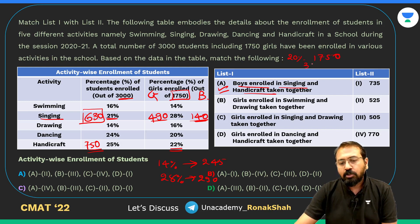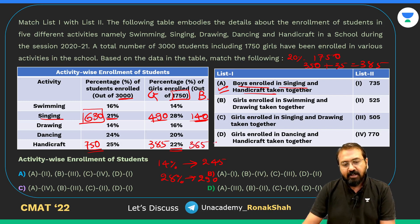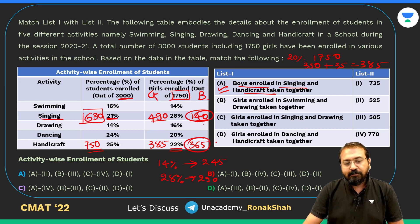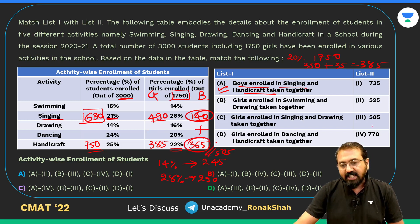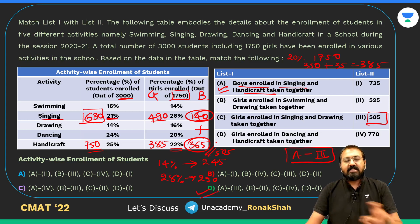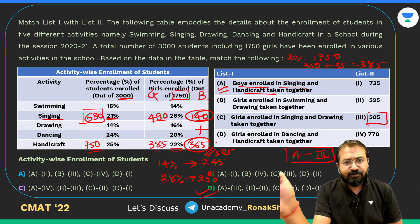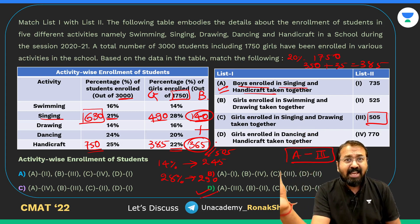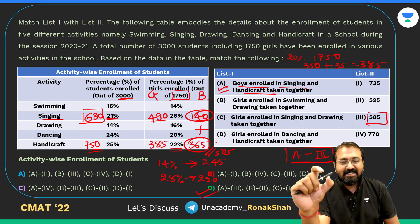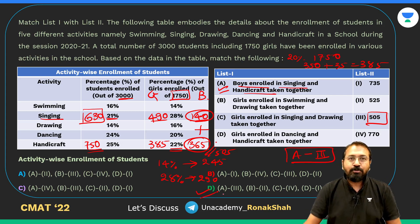For handicraft: 22% of 1750 are girls. 20% of 1750 is 350, plus 2% which is 35, gives 385 girls. Boys = 750 minus 385 = 365. Total boys in singing and handicraft together = 140 plus 365 = 505. So the answer maps to option 3, and since only one option has A→3, the answer is option D.